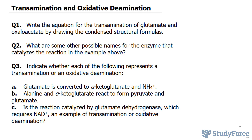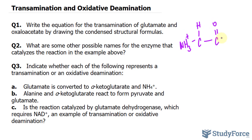In case that's confusing, let's go ahead and figure this one out. First, let me draw out what glutamate looks like. We have the central carbon and its hydrogen bonded to NH3+, and that is bonded to the carboxyl group. The R group for glutamate looks like this: CH2, CH2, and that's bonded to another carboxyl.